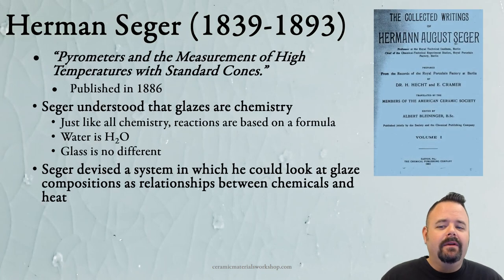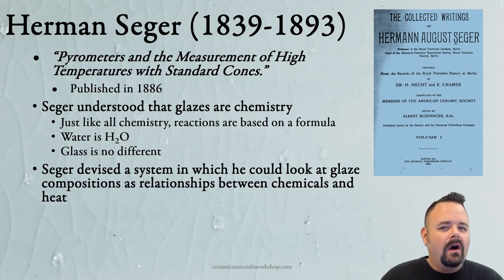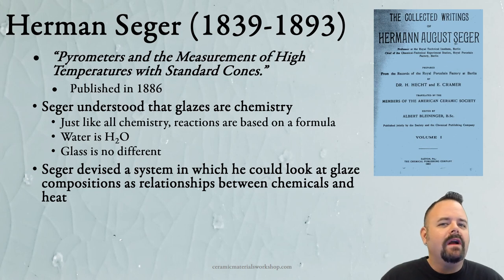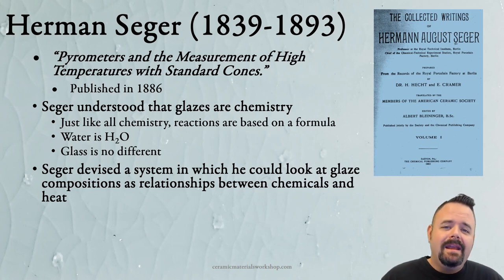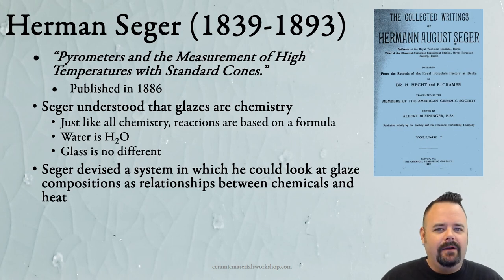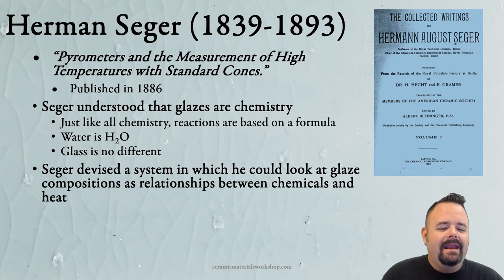In 1896, Seeger published his paper, 'Pyrometers and the Measurement of High Temperatures with Standard Cones.' What Seeger understood — so revolutionary — is that glazes and glasses are chemistry. This is a bit controversial in art, where we like to believe our artistic intention overcomes the chemistry of materials. But that's just not true. We still have to look at chemistry in everything. The ocean might be an amazing, beautiful place, but it's still just H₂O molecules. We can use artistic intention to manipulate chemistry and communicate through ceramics, but we're still utilizing chemistry every single time we turn on the kiln.